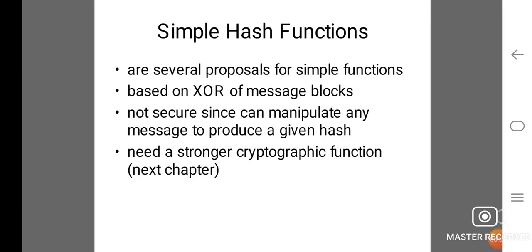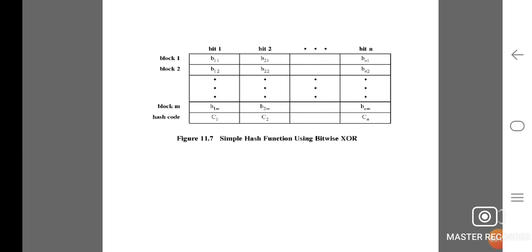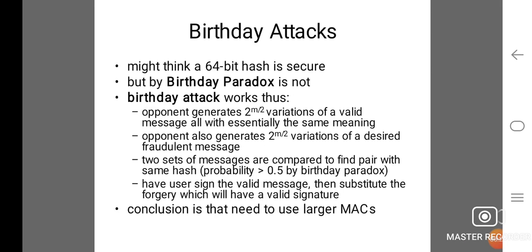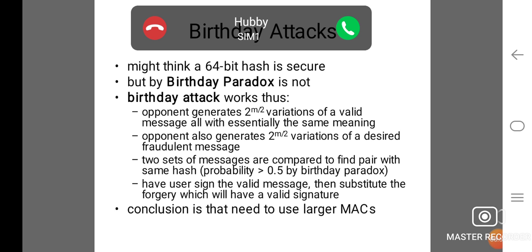Simple hash functions are based on XOR of message blocks, but are not secure since an attacker can manipulate any message to produce a given hash — a stronger cryptographic function is needed. Birthday attacks: one might think a 64-bit hash is secure, but by the birthday paradox it is not. An opponent generates 2^(m/2) variations of a valid message, all with essentially the same meaning, and also generates 2^(m/2) variations of a desired fraudulent message.